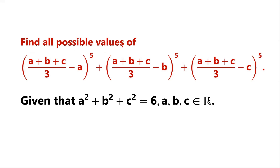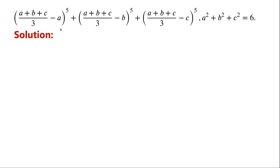Find all possible values of this algebraic expression, given that A squared plus B squared plus C squared equals 6, where A, B, C are real numbers. It seems that solving this problem is not easy. Before solving it, we might be able to simplify this algebraic expression.